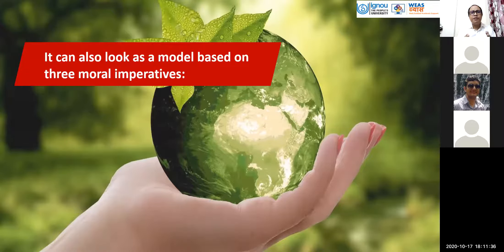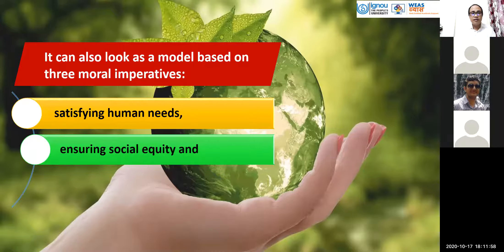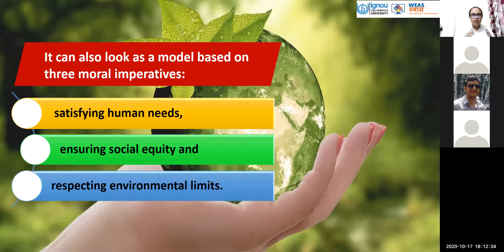These three pillars can be looked into as three moral imperatives: satisfying human needs, ensuring social equity, and respecting environmental limits. Satisfying human needs relates to the economy pillar. Ensuring social equity means all should have equal access to resources — the social pillar. Respecting environmental limits means environmental quality — the environmental pillar. These three pillars can be looked into from a moral point of view.